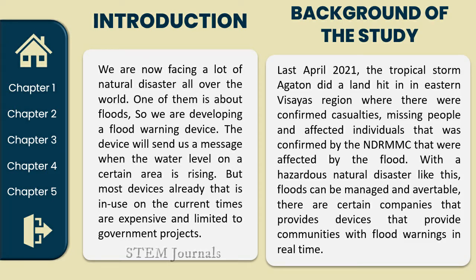This is our background of the study. The Philippines is ranked third among other countries for disasters that affect over 100 million people, causing 80% deaths and 90% affected by natural disasters. Floods are a common occurrence during storms. In April 2021, Tropical Storm Agateng made landfall in the eastern Visayas region, with 75 confirmed casualties, 28 missing, and 920,722 affected, as confirmed by the NDRRMC.